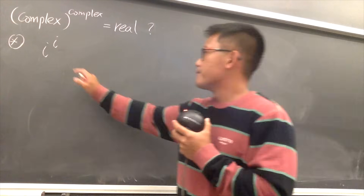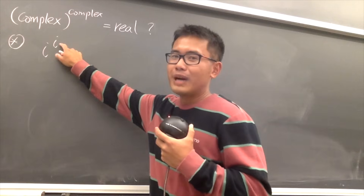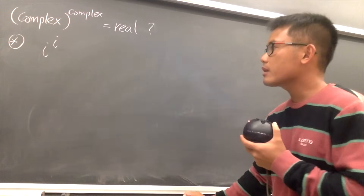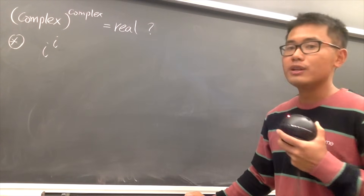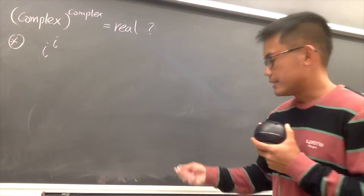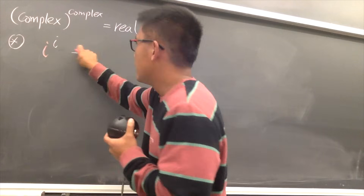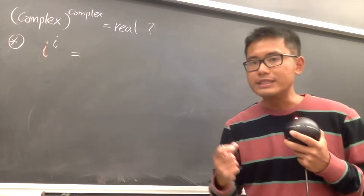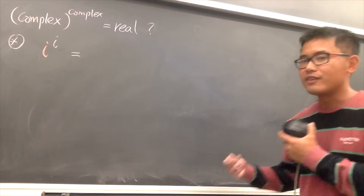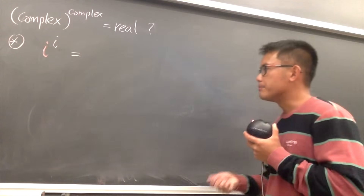How about we take a look at i to the i, because i is complex and this i in the power is also complex. What is this going to be? We have seen when you have i in the power, but we haven't seen when we have i in the base and also i in the power. We have to utilize Euler's formula — we have to use e to the i theta somehow.